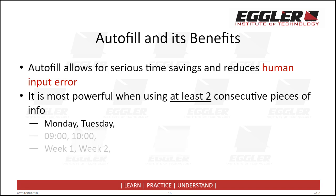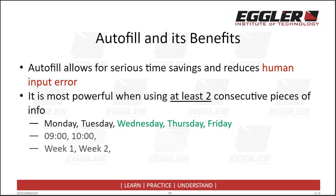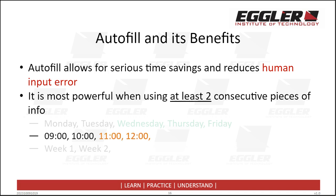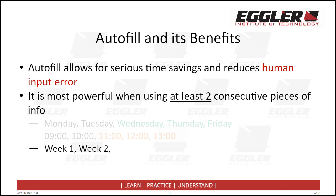For example, if we had Monday and Tuesday as two consecutive pieces of data, Autofill would be able to use this information to populate Wednesday, Thursday, and Friday. If we provided two times such as 9am and 10am, Autofill could use this pattern to provide 11am, 12pm, and 1pm. Lastly, if we had provided Week 1 and Week 2, Autofill would be able to populate weeks 3, 4, and 5, or however many weeks as desired.